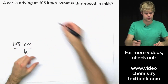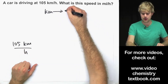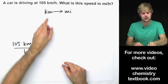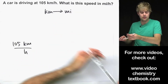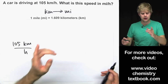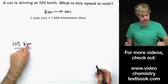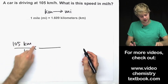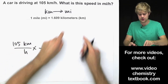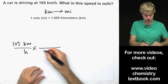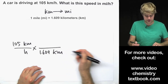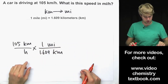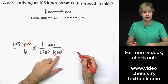We want to go from kilometers per hour to miles per hour — so from kilometers to miles. To do this conversion, I need to find a relationship between kilometers and miles, which you can look up. I want to write this as a conversion factor to get rid of kilometers and put miles instead. Kilometers is up here, so I want to put kilometers down here so they cancel out. So 1.609 kilometers goes on the bottom, and 1 mile goes on the top.